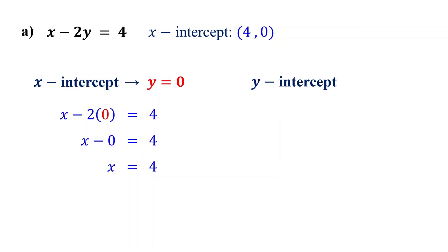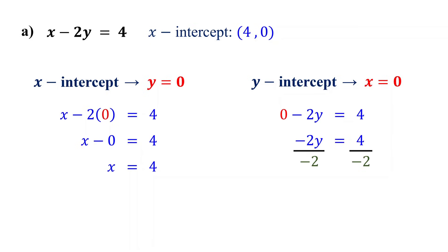The y-intercept is the point where the graph crosses the y-axis. At this point, the value of x is 0. So, set x to 0 and solve for y. This simplifies to negative 2y equals 4. Next, divide both sides by negative 2 to isolate y. These cancel out, and 4 divided by negative 2 equals negative 2. Therefore, the y-intercept is the point 0 comma negative 2. This is where the line crosses the y-axis.